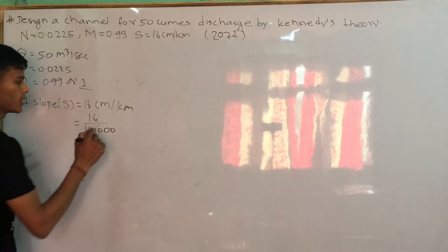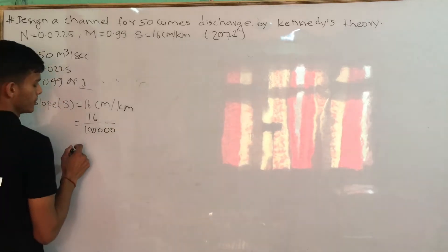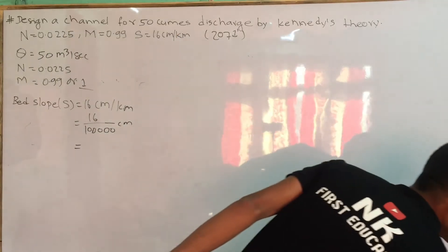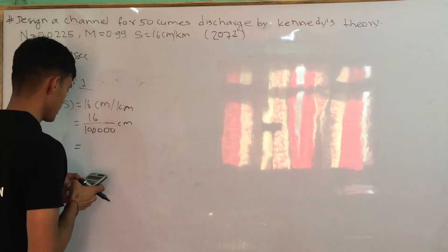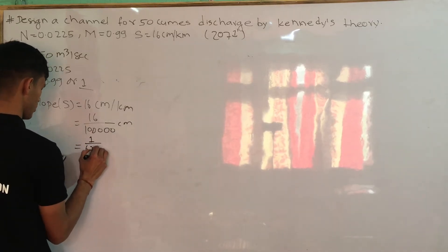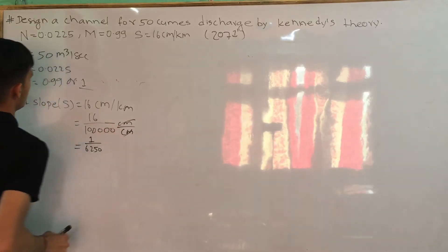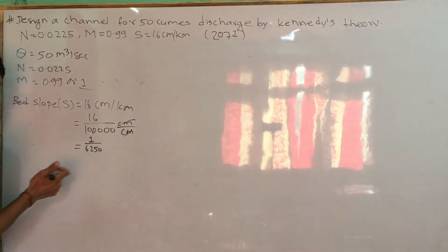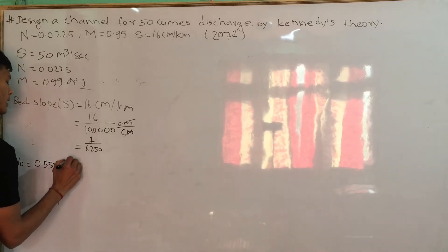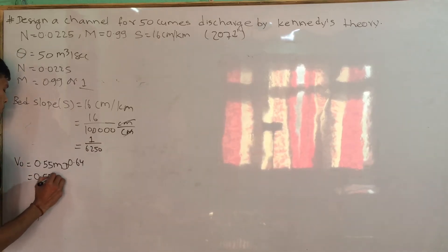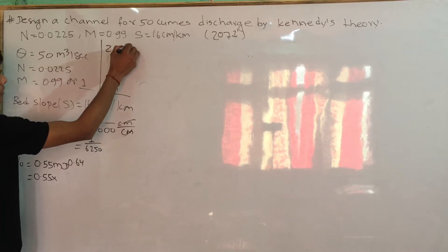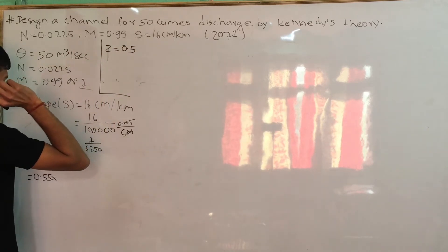I am going to show you the video. The given values include 5.0 cm, 8 cm, and slope. Velocity, critical velocity: 0.55 m depth. Side slope Z denotes 0.5.